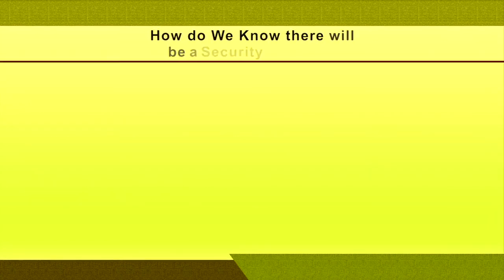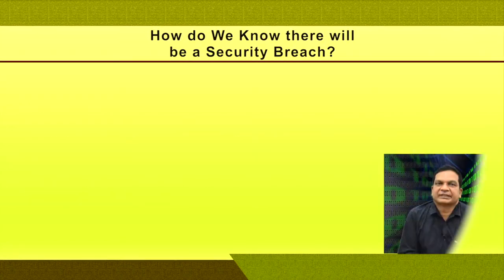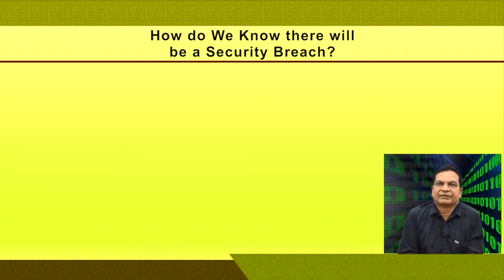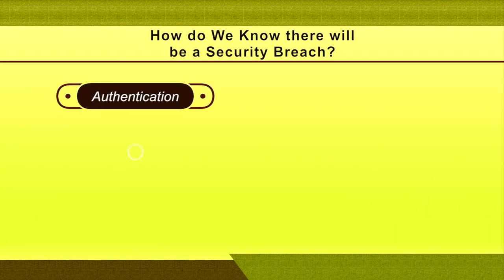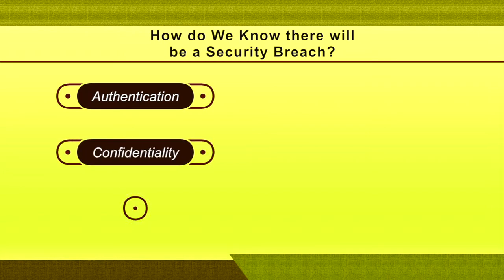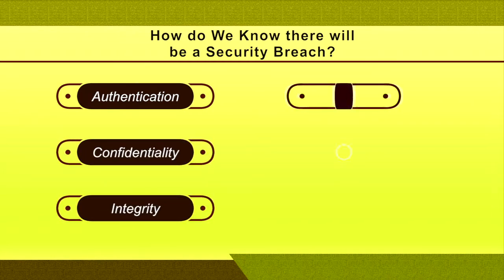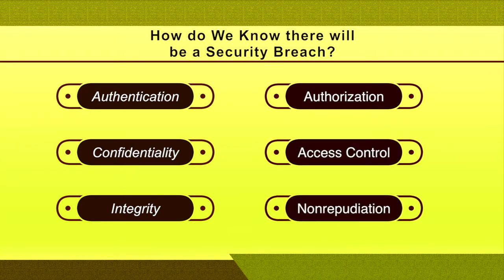How do we know that there will be a security breach? It is a big question even for system administrators to know how there is a security breach. Violation of any of the following security parameters leads to a security breach: authentication, confidentiality, integrity, authorization, access control, and non-repudiation. Violation of any of these parameters leads to a security breach.